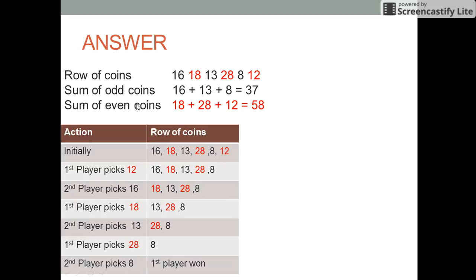Then we find the sum of even numbered coins, that is 18 plus 28 plus 12 which is 58. So now the first player would pick the coins in such a way that he always picks up even numbered coins. He would initially pick 12 instead of 16 now.